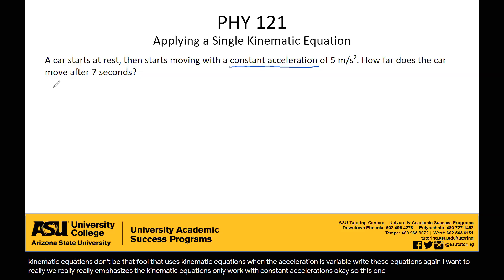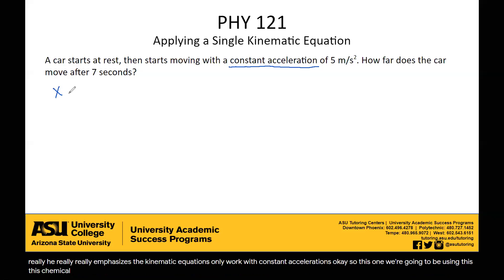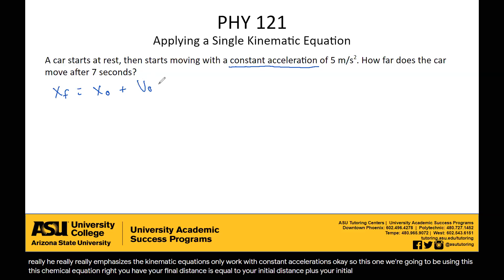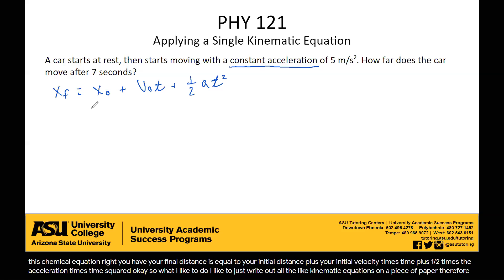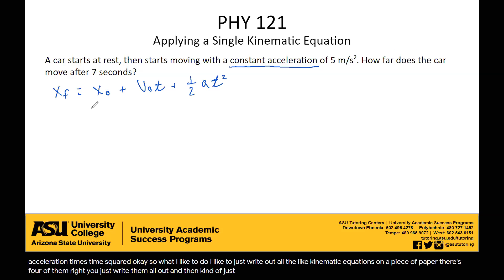So we're going to be using this kinematic equation: the final distance equals the initial distance plus the initial velocity times time, plus one-half times the acceleration times time squared. What I like to do is write out all four kinematic equations on a piece of paper, read the problem statement, and then pick an equation that fits what you're given.